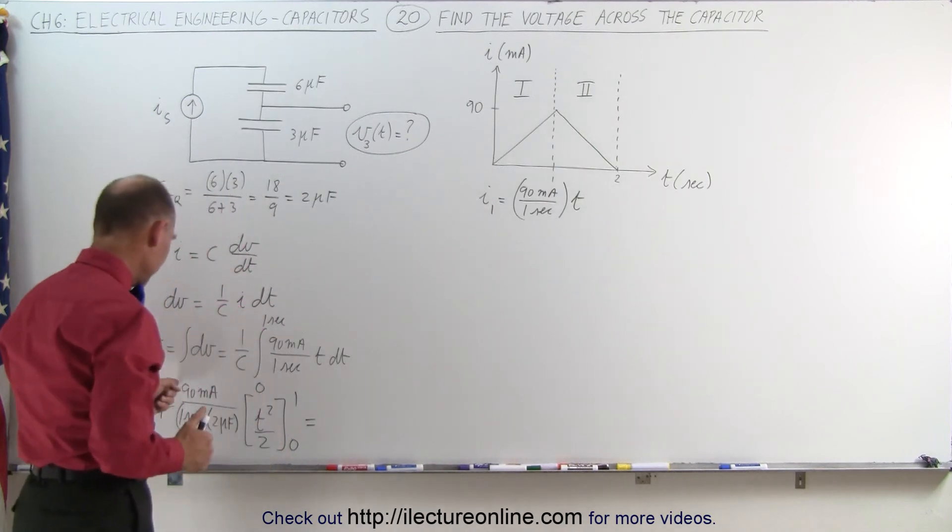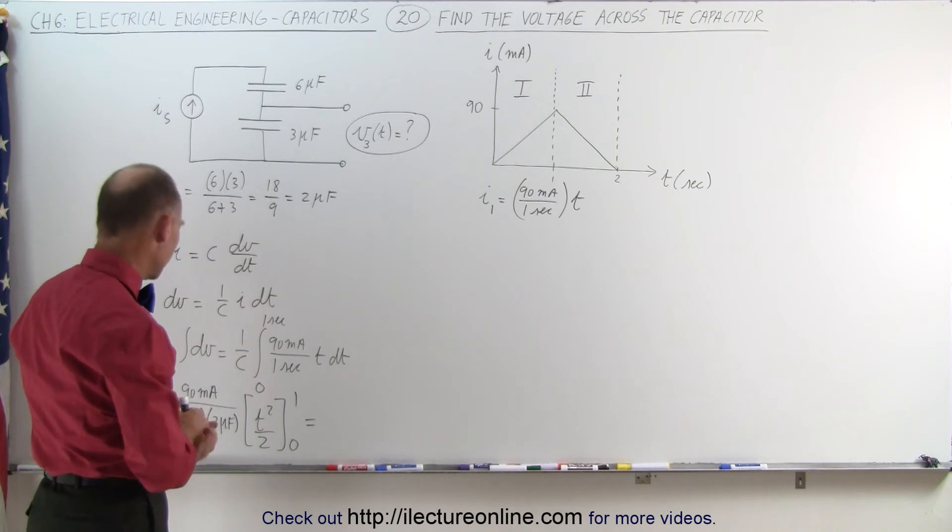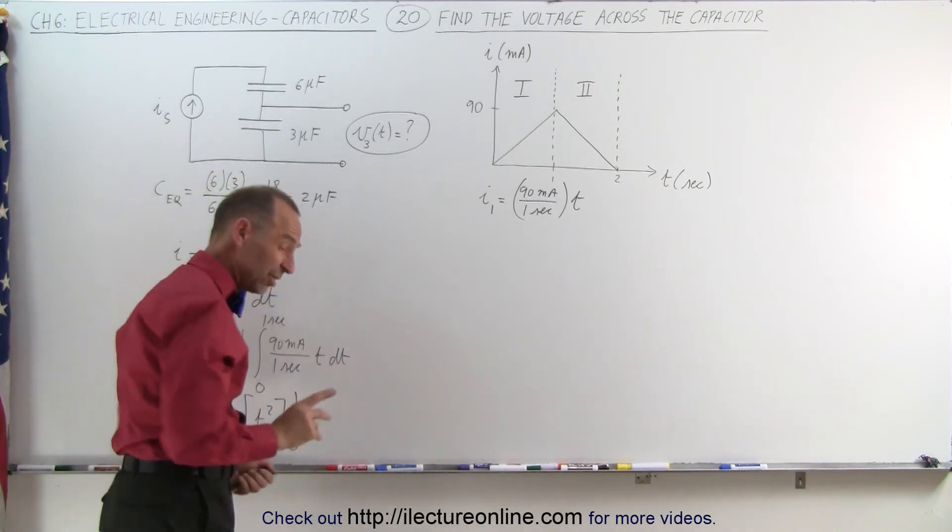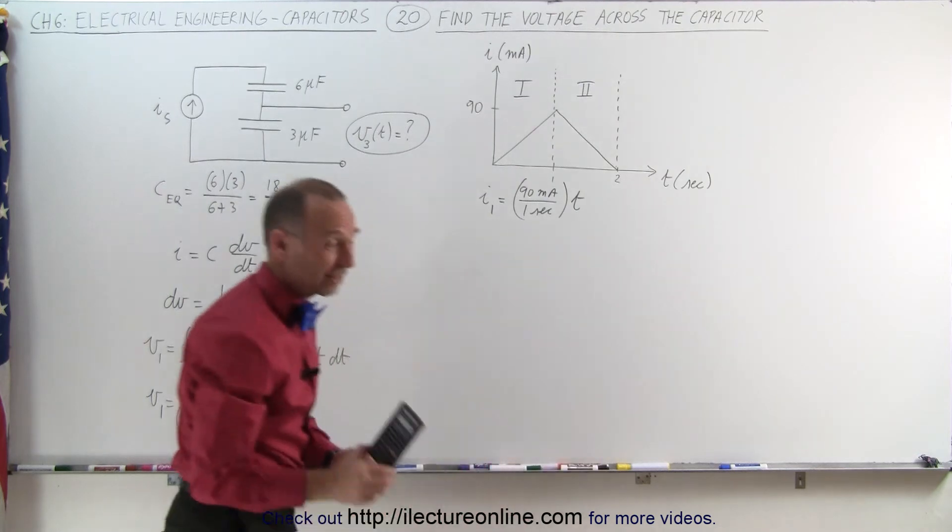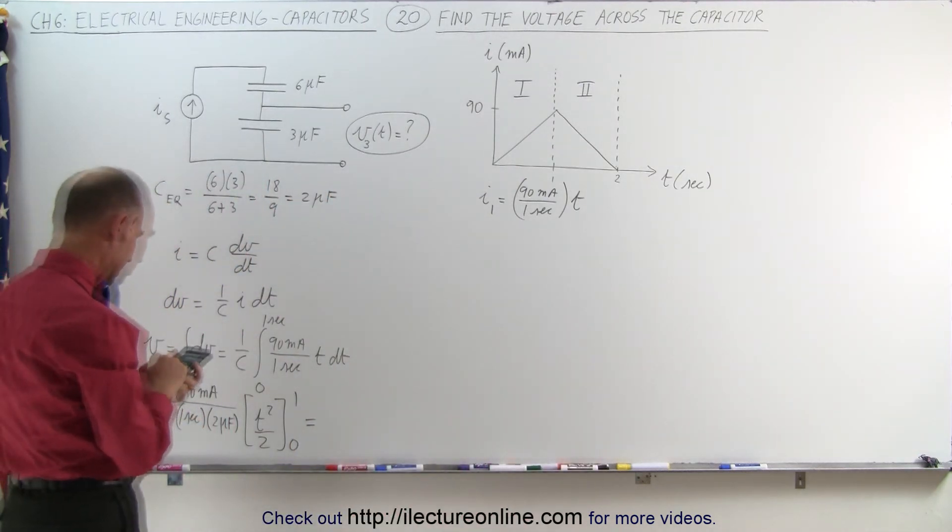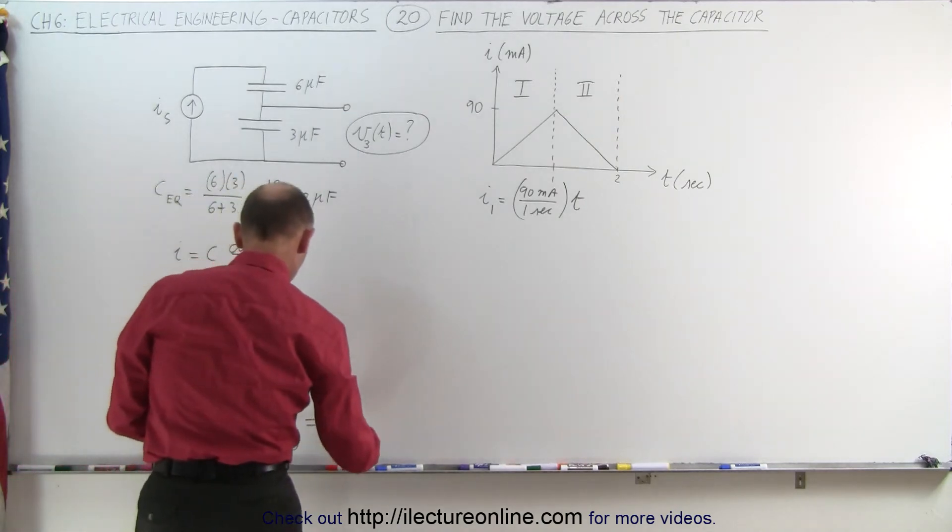Which is equal to, we get 90 milliamps, divided by 2 microfarad, divided by 2, that would be 45, 22 and a half, I think it's 22 and a half volts. Just make sure I get this right, I'll use a calculator, so we have 90, divided by 2 equals, and yes, we get 22,500 volts.